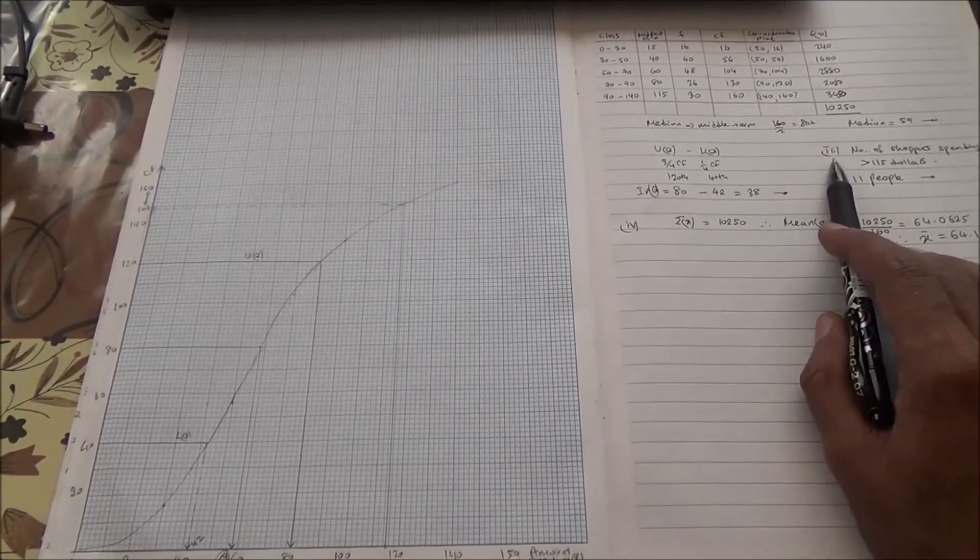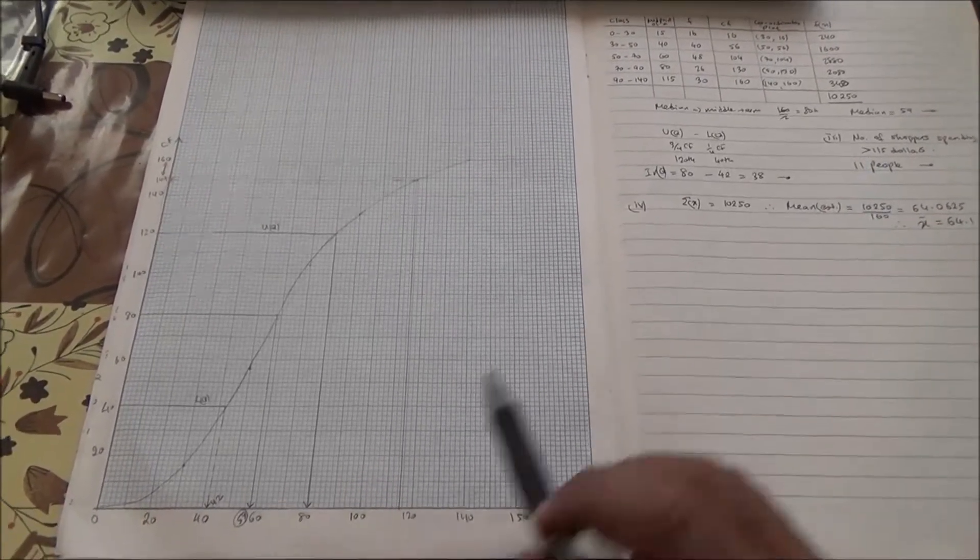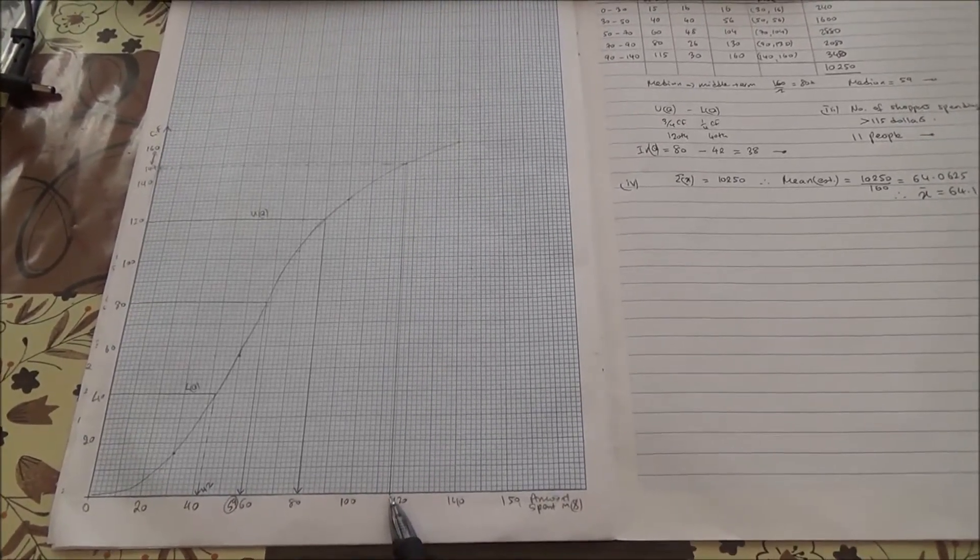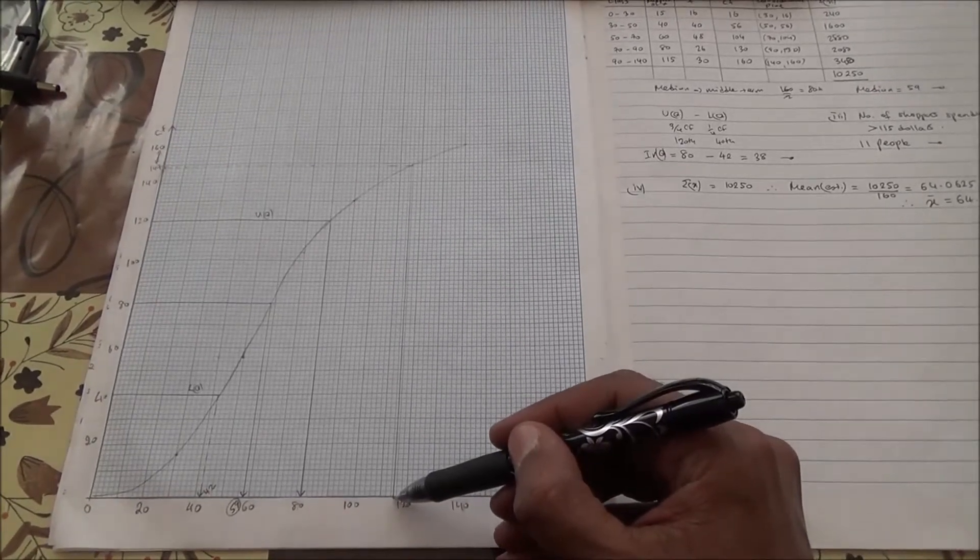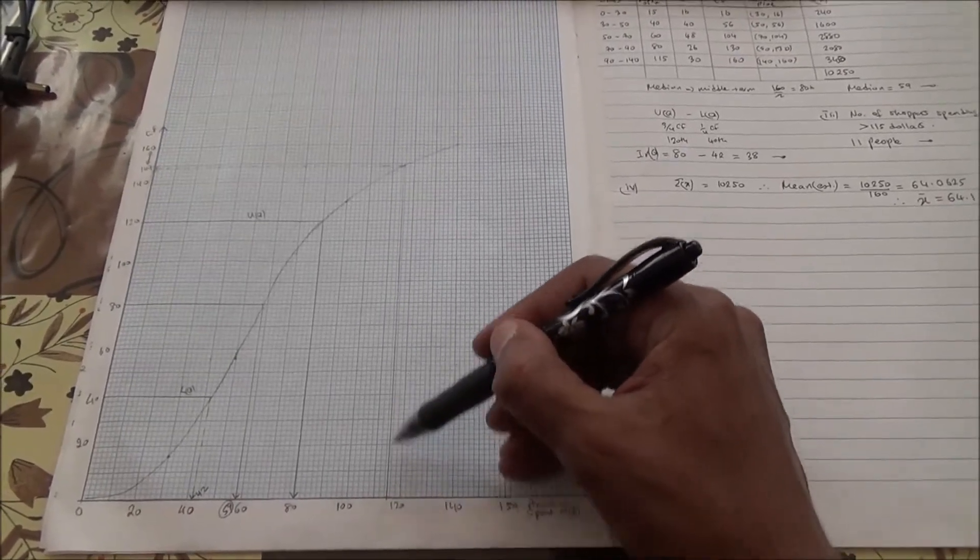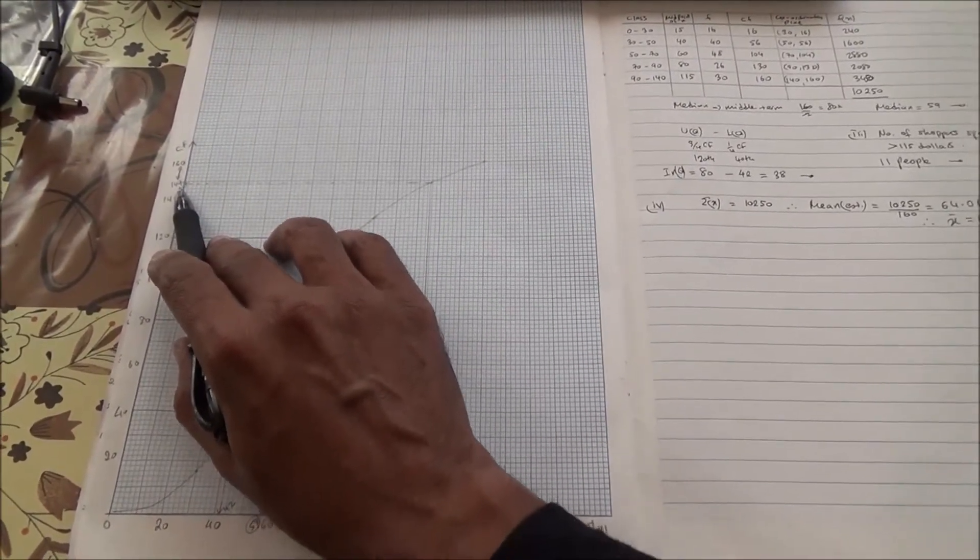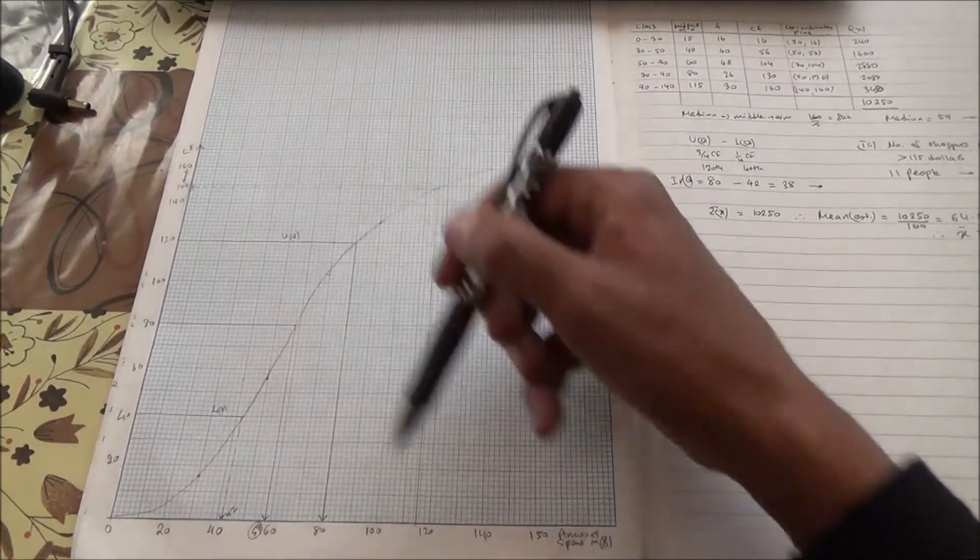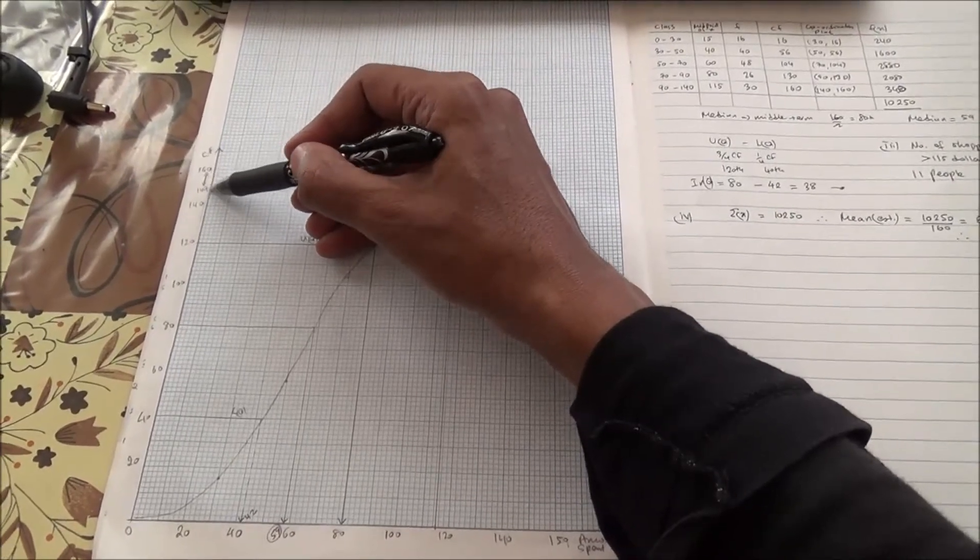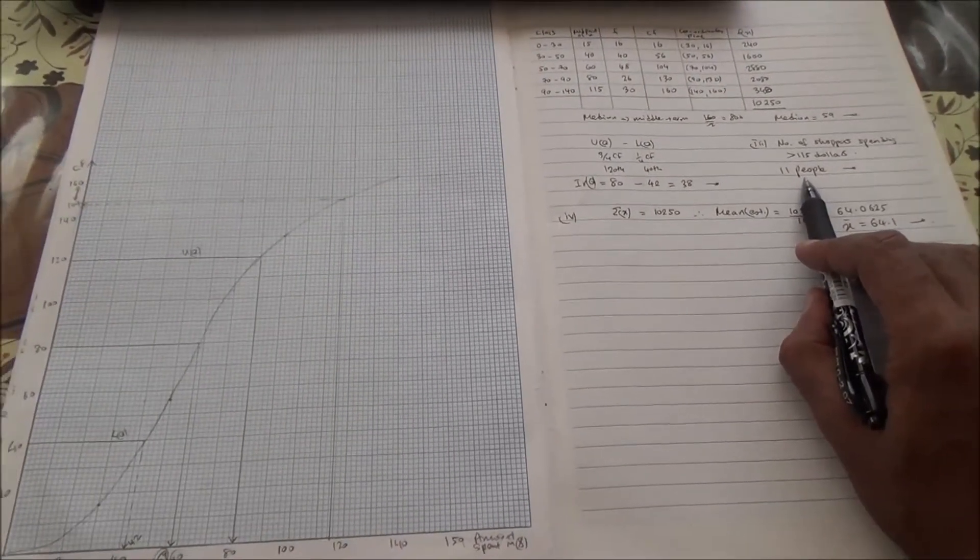And also, we need to estimate for the third part how many of those shoppers are spending more than $115. If we look at the horizontal line, more than $115 is somewhere here. I mean, if you start from here, it's going to be $115. So more than that, all here: $120, $140, $150. So you just draw a line, you go up all the way to the curve and read here. You're going to come to 149. To be able to know how many people are spending more than $115 here, it's going to be from 149 to 160. Therefore, we take 160 minus 149, and that's going to give us 11. And therefore, we have 11 people spending more than $115.